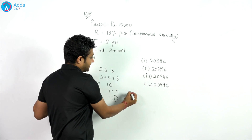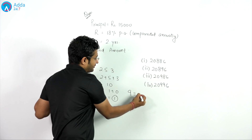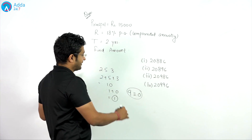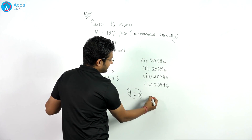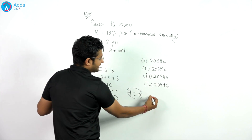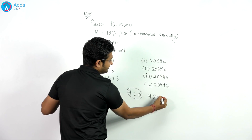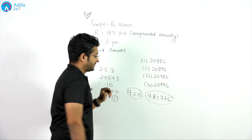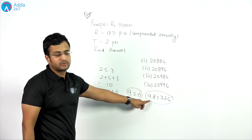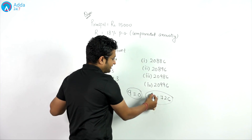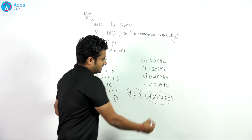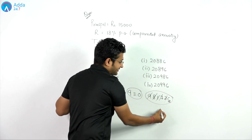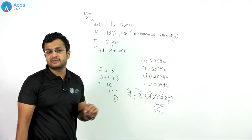In the digital sum method, 9 is always equivalent to 0. So wherever we get 9, we consider it equal to 0. For example, take the number 981726. Wherever we see 9, it becomes 0. Then 8 plus 1 equals 9, which also becomes 0. Then 7 plus 2 equals 9, which becomes 0. So the only digit left is 6, and the digital sum of this number is 6.